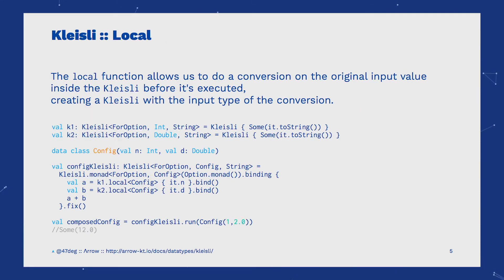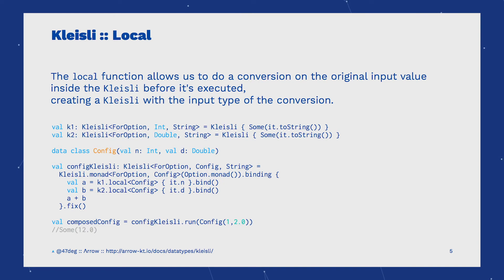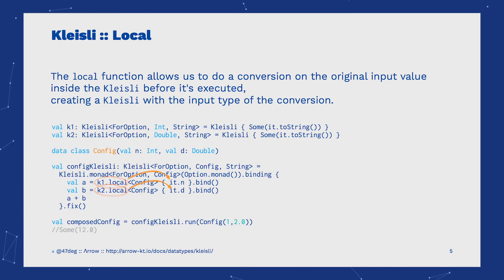The local function allows us to do a conversion on the original input value before it is executed, creating a Kleisli with the same input type of the conversion and the same context and output type. We can create a Kleisli which receives a config object and uses local to transform the config parameter into the Int or Double before Kleisli k1 or k2 is executed.